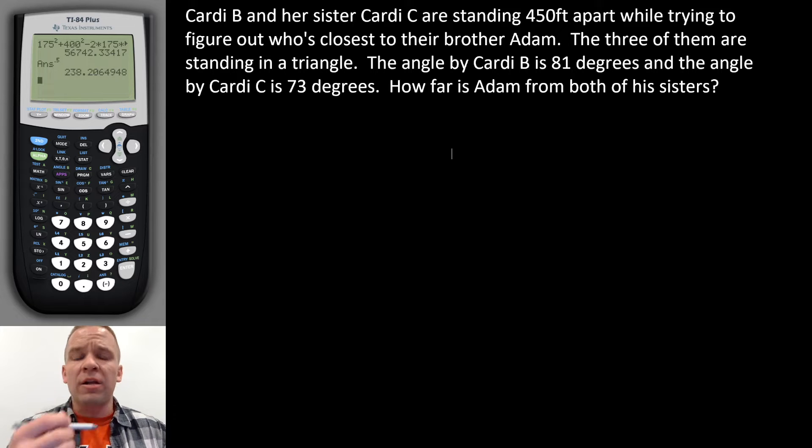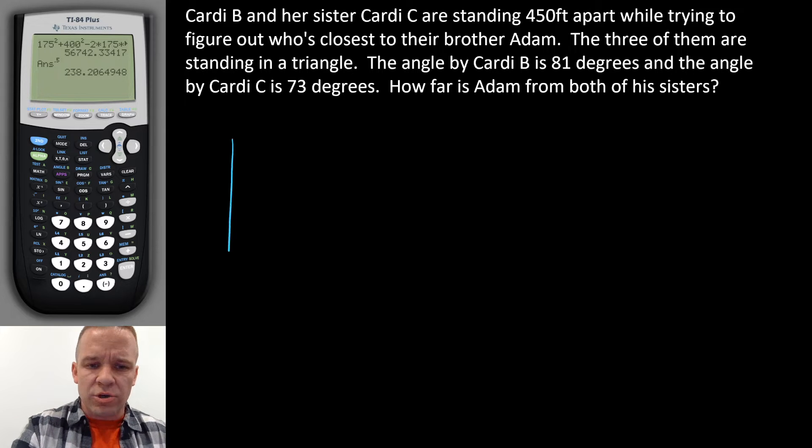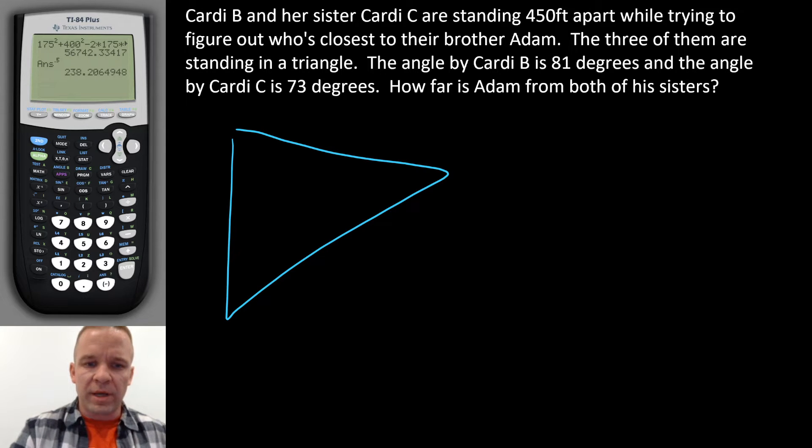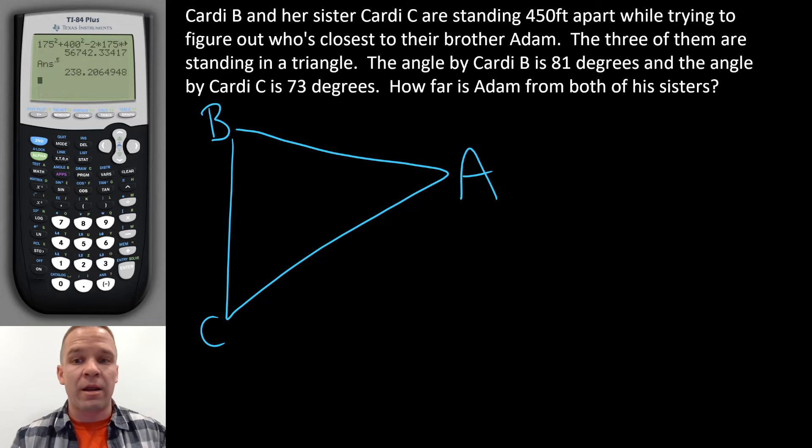Well, let's see here. Luckily, their initials here are very easy to work with with A, B, and C. So I'm just going to go ahead and create a triangle here. Something like that. We've got Cardi B. She's chillin' here. We've got Cardi C right here. Then we've got their brother Adam.